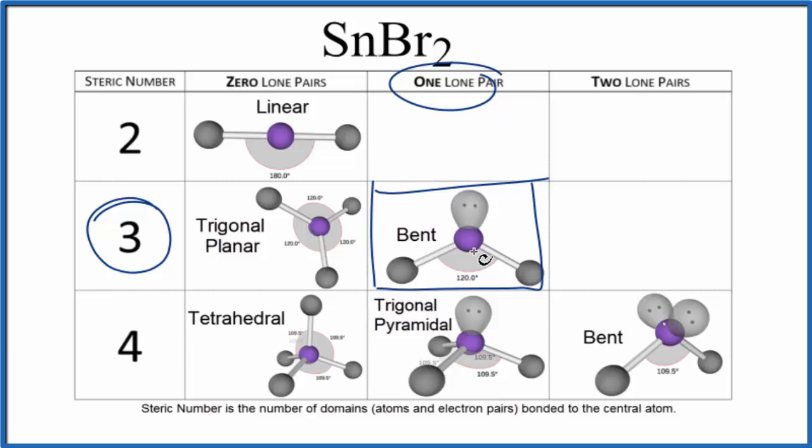But we have this bent molecular geometry. If you use the AXN notation, A is the central atom, the tin. We have two bromine atoms and one lone pair. This would tell you that you had the bent molecular geometry as well.